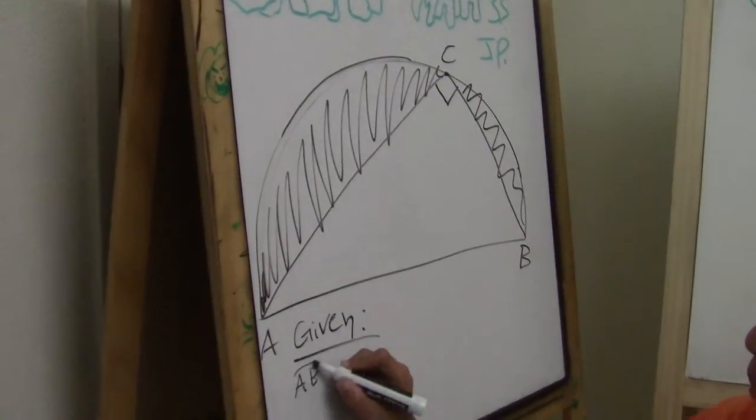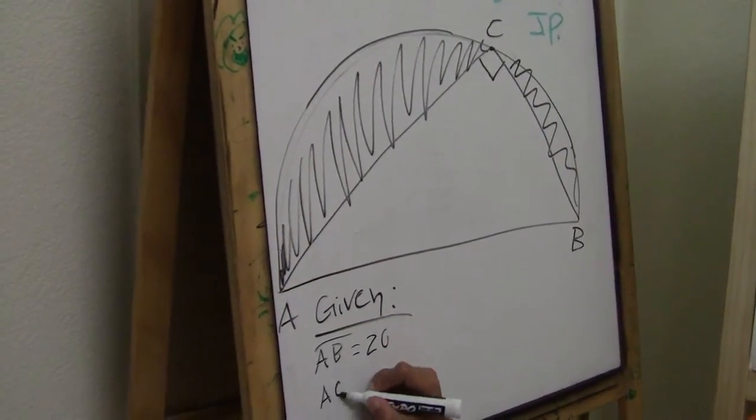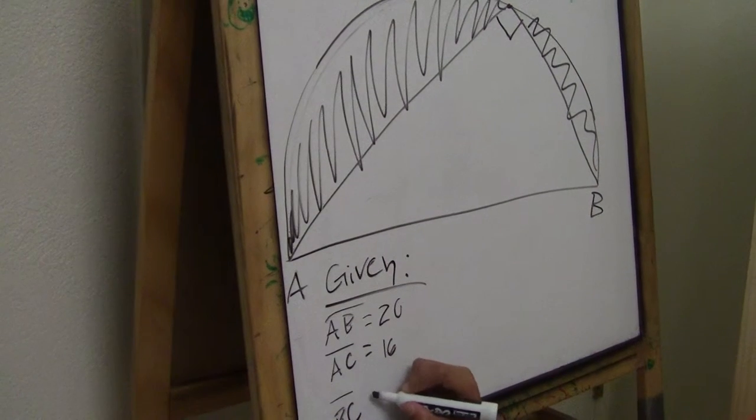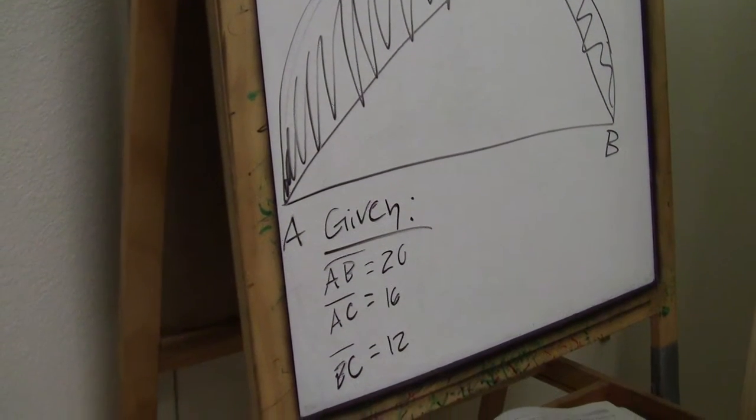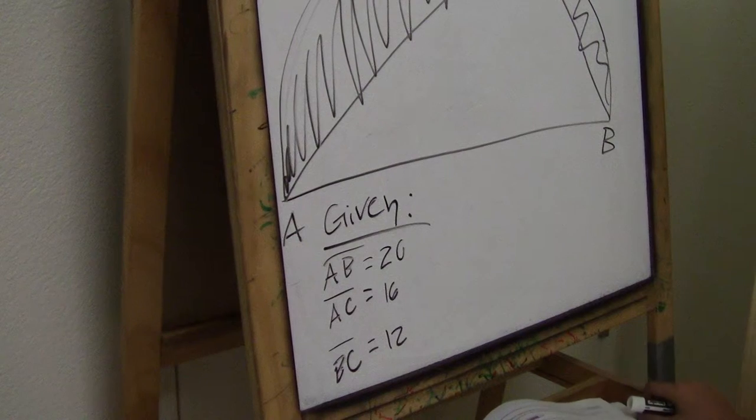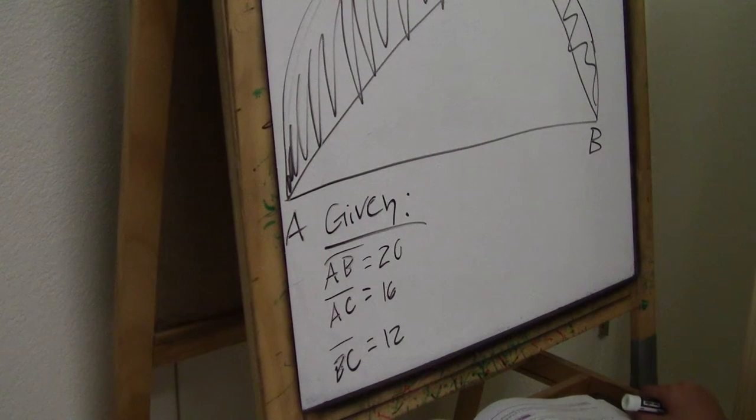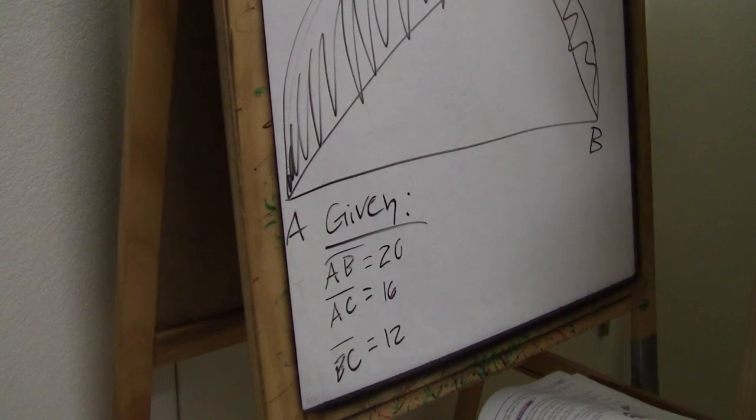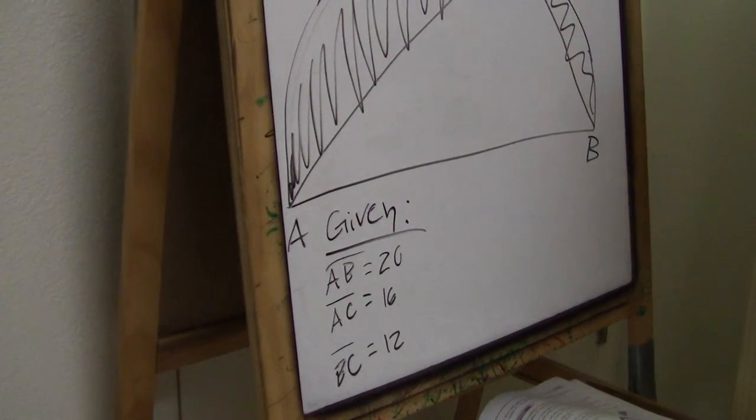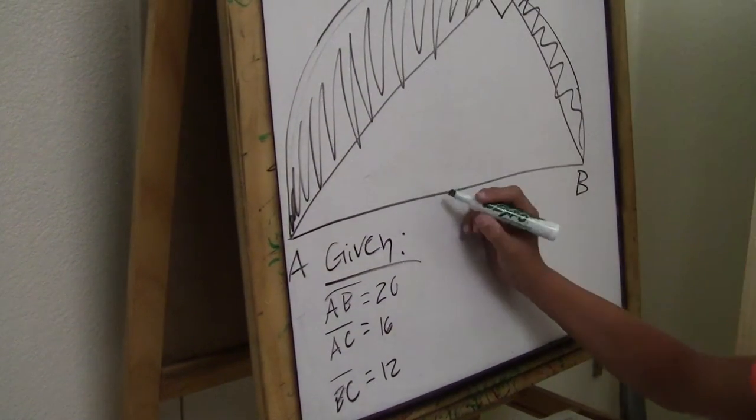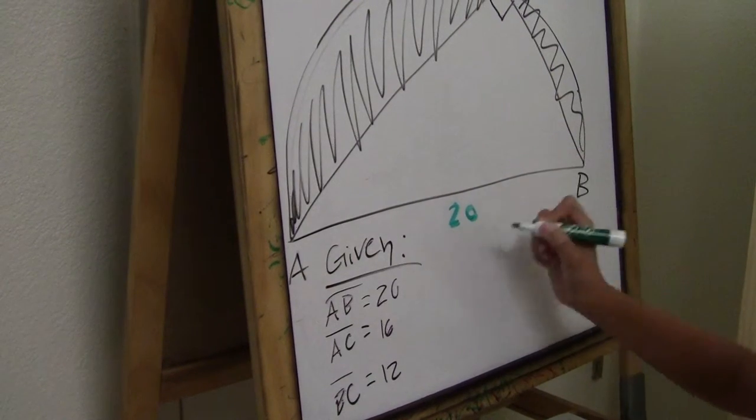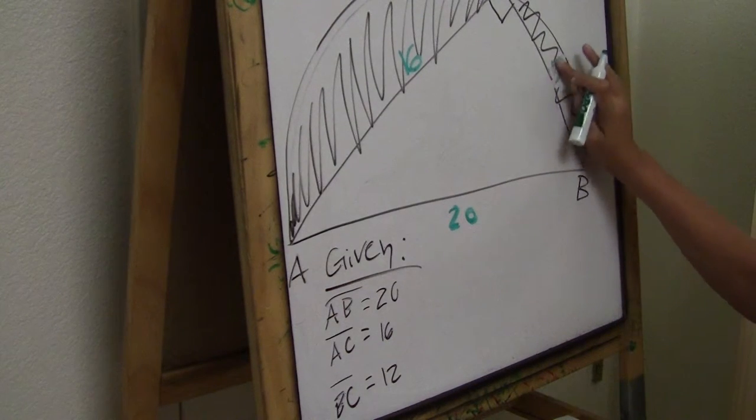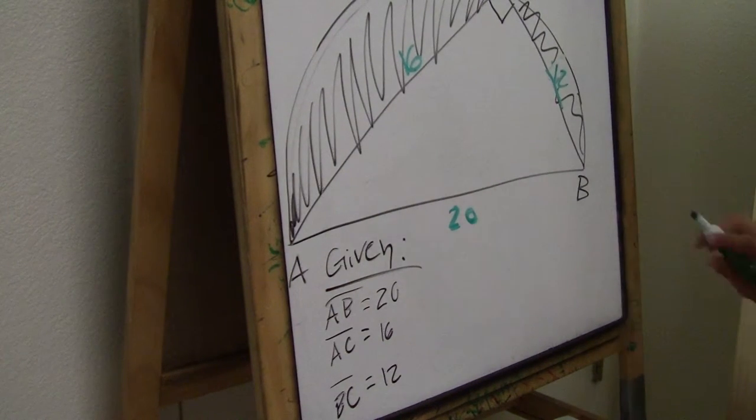We know that AB is equal to 20, we know that AC is equal to 16, and we know that BC is equal to 12. So now, we have to write down 20, that's that, 16, that's that, and 12 is here.